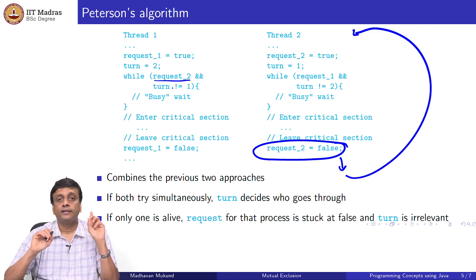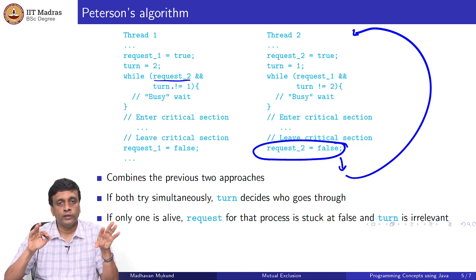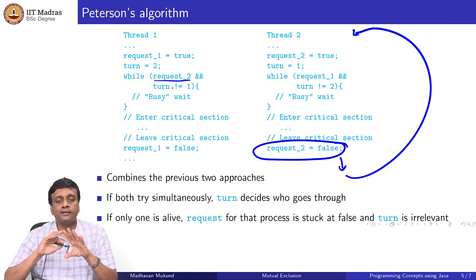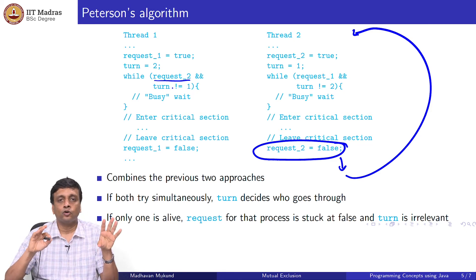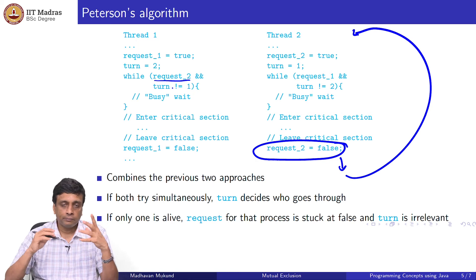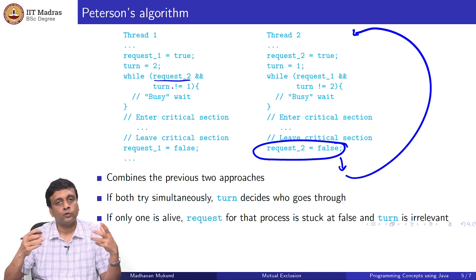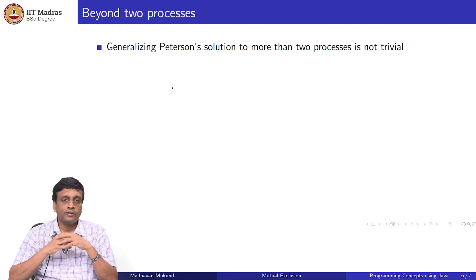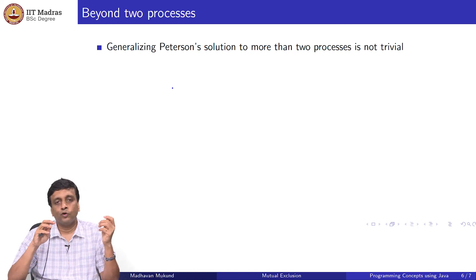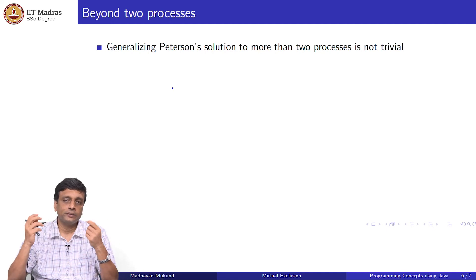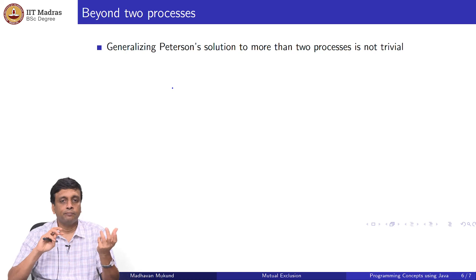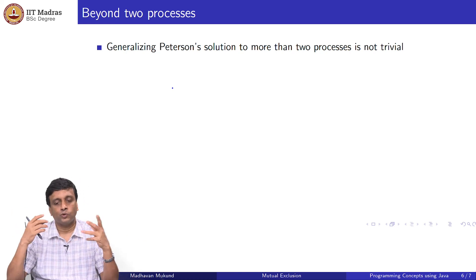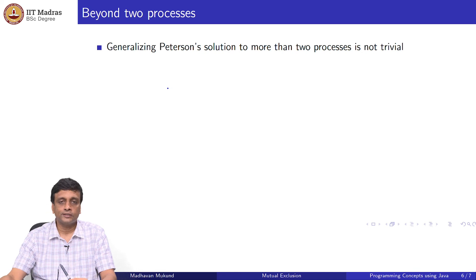Remember, the important thing is there are no special assumptions: request one and request two are Boolean, and turn is either 1 or 2. Other than that, there is no assumption about initial values, and no assumption that they are updated atomically — they are just normal shared variables updated in the usual race-condition way. These are solutions for two processes. If you go to three processes, it is not so easy — should turn have values 1, 2, 3? Should there be one turn variable for every pair? Should there be three requests? Generalizing to more than two processes is not very easy.